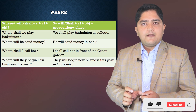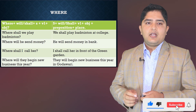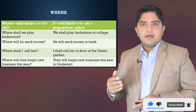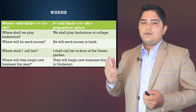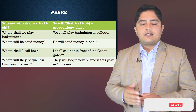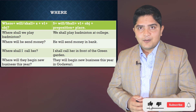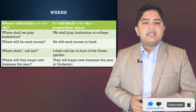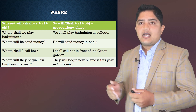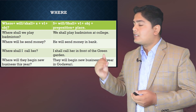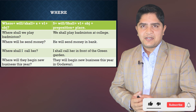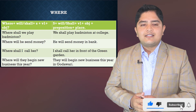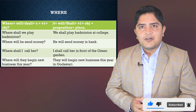For example: 'Where shall we play badminton?' — answer: 'We shall play badminton at college.' Similarly, 'Where will he send money?' — answer: 'He will send money in the bank.' These show the place using a preposition.